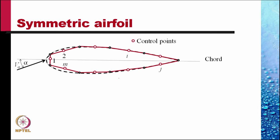We number the panels and the control points 1, 2, 3, i, j up to m. So there are m panels and m control points we have chosen.